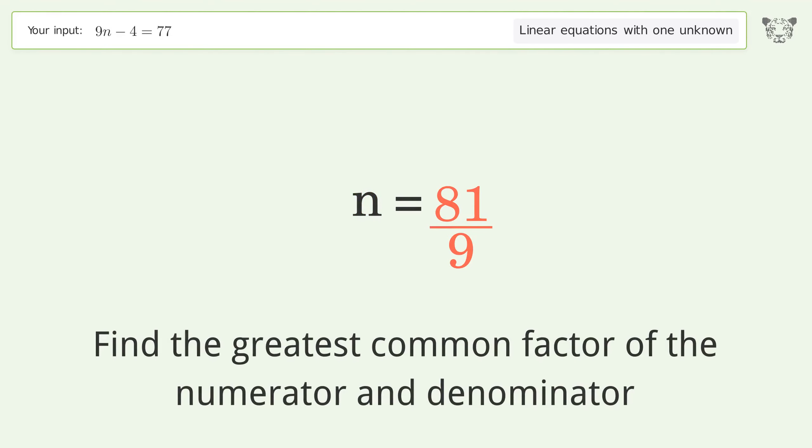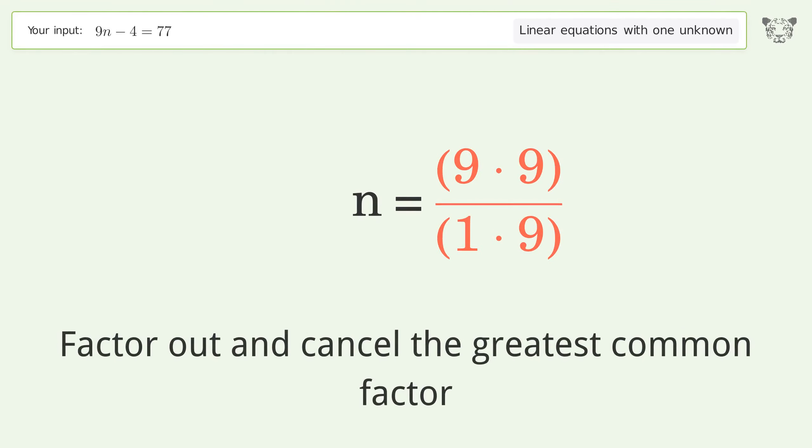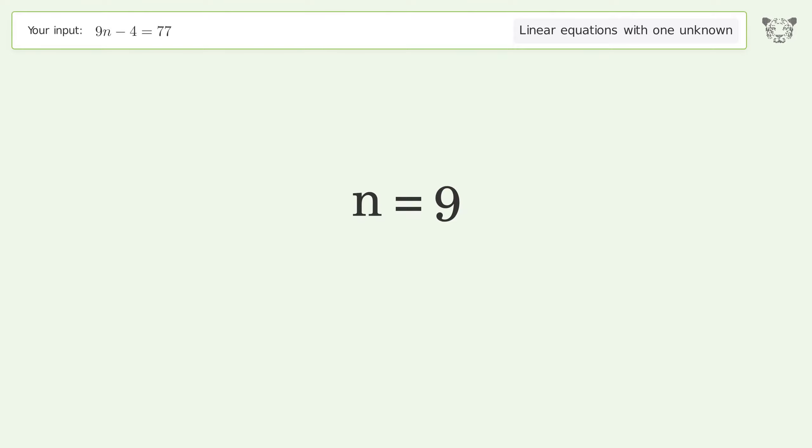Find the greatest common factor of the numerator and denominator. Factor out and cancel the greatest common factor. And so the final result is n equals 9.